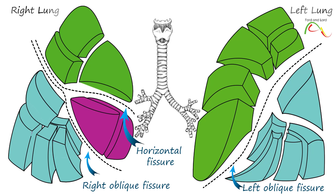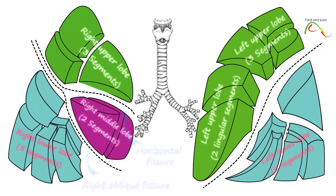Exchange of air in one segment takes place via just one segmental bronchus, and deoxygenated blood goes to that bronchopulmonary segment via just one branch of the pulmonary artery that travels along and branches further with the segmental bronchus. Both run together through the center of the segment while dividing further into smaller branches.